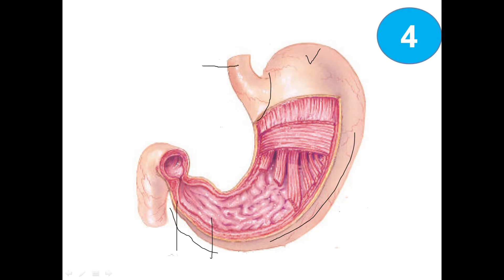We got here the esophagus, we got here the duodenum. It has two curvatures — the greater curvature and the lesser curvature. This one here is the cardiac notch, and this one here is the pyloric sphincter.